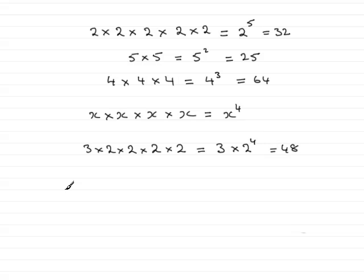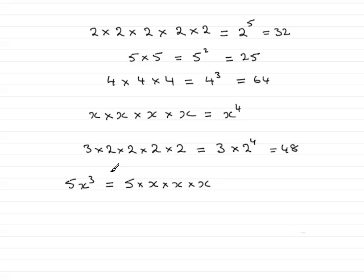If I wrote something like this algebraically — like 5x cubed — what this means is it's short for 5 times x times x times x. So we get algebraic notation as well as numerical notation, and hopefully you can see what this means.